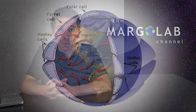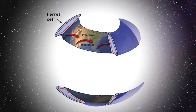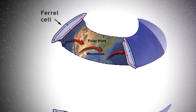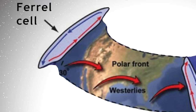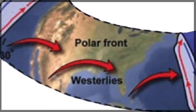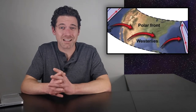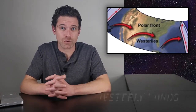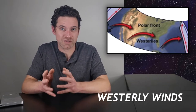The lower limbs of the Ferrel cells are also associated with winds; however, since the circulation of these cells is towards the poles rather than the equator, they veer to the east rather than the west. For some reason these winds were not given a creative name like the trades and are instead referred to as the westerly winds, or simply the westerlies.